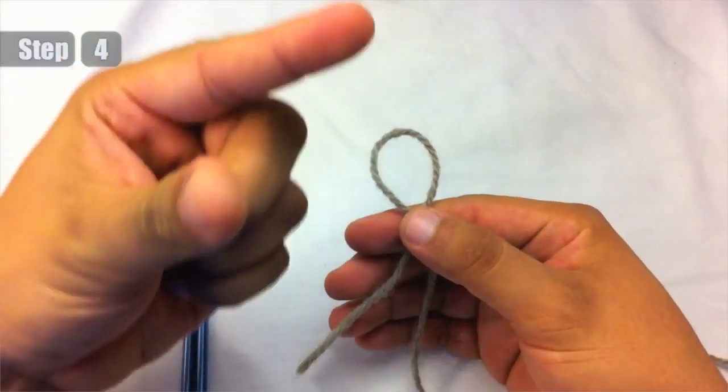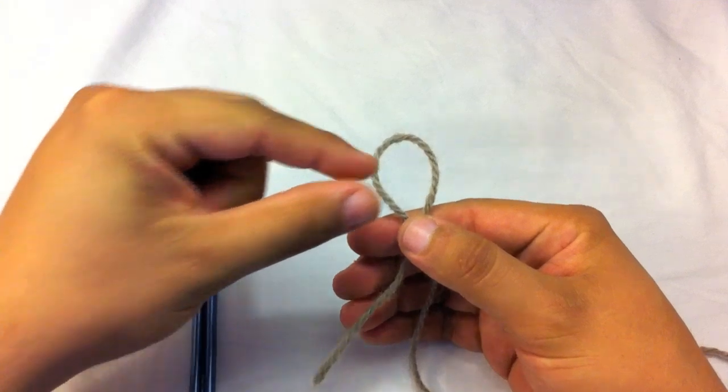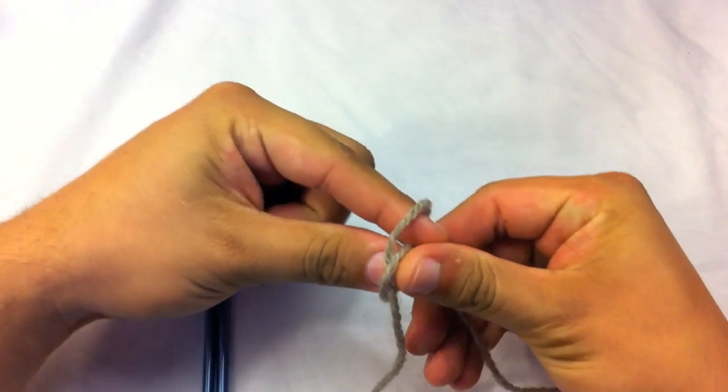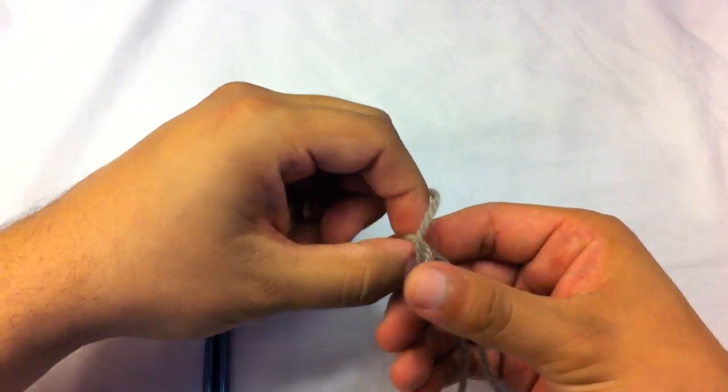Step 4. Take your index finger and your thumb and pull the main string through the loop. This will create a second loop.